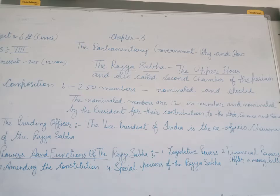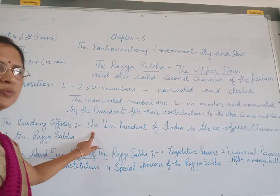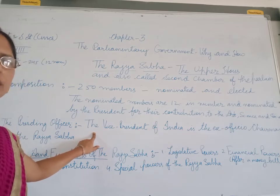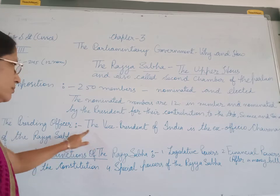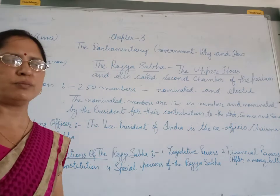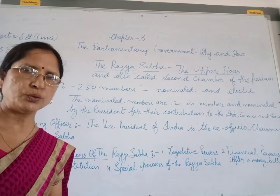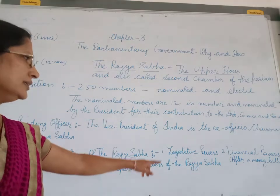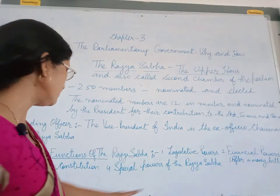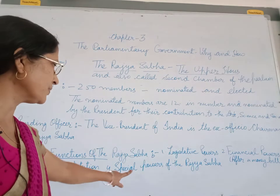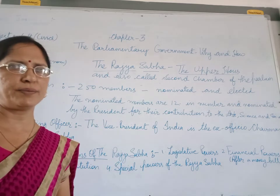So here in this topic, what we covered is: the presiding officer — determining the role of the presiding officer — just as the Speaker presides over meetings in Lok Sabha, similarly the presiding officer here, i.e., the Vice President, is also the ex-officio Chairman of the Rajya Sabha. It is the Vice President who presides over meetings. After that we covered the powers and functions of the Rajya Sabha — legislative powers, financial powers, amending the constitution, and the special powers of the Rajya Sabha.